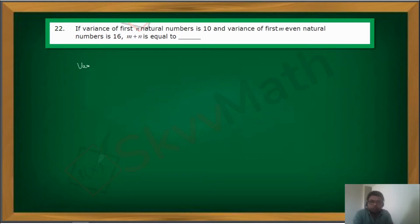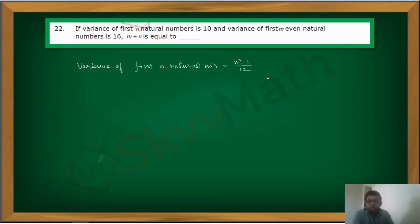For the variance of the first n natural numbers, I am using the shortcut formula: variance of first n natural numbers equals (n² - 1)/12. This value is given as 10, so (n² - 1)/12 = 10, which gives n² = 121, implying n = 11.